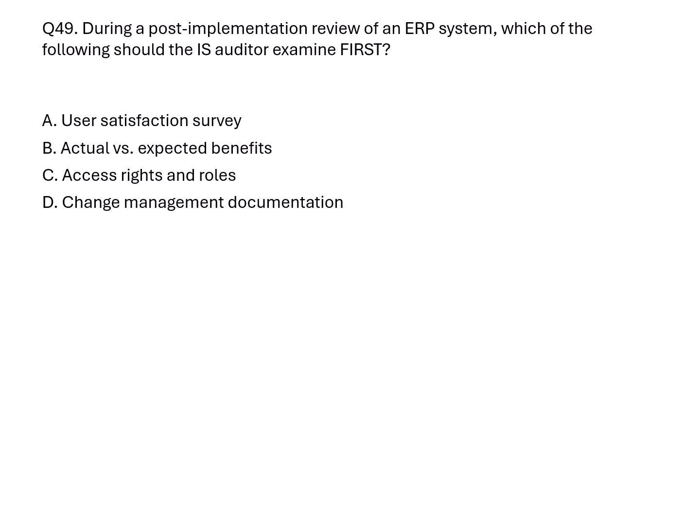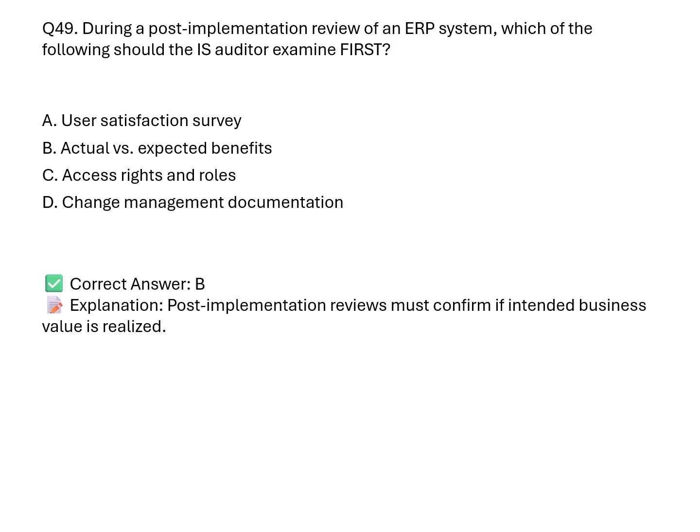Question 49. During a post-implementation review of an ERP system, what should the auditor examine first? A. User satisfaction survey. B. Actual versus expected benefits. C. Access controls. D. Change management documentation. Correct answer: B. Explanation: The primary goal of post-implementation review is to measure whether the expected value or benefits were realized.